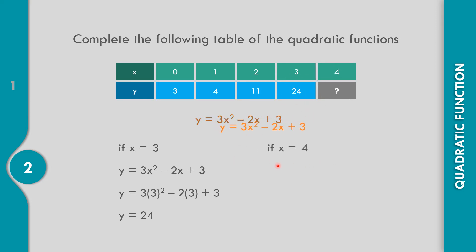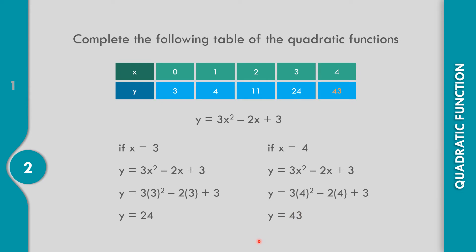If x equals 4, replace into the formula: y equals 3 times 4 squared minus 2 times 4 plus 3. That is 4 times 4 equals 16, times 3 equals 48. Negative 2 times 4 is negative 8, so 48 minus 8 equals 40, plus 3. Y equals 43. The values of y are 3, 4, 11, 24, and 43. The ordered pairs are (0, 3), (1, 4), (2, 11), (3, 24), and (4, 43).